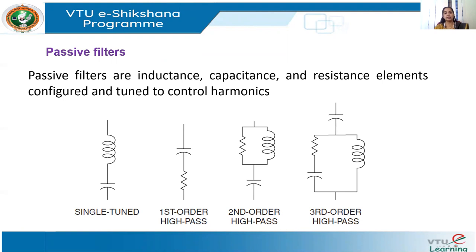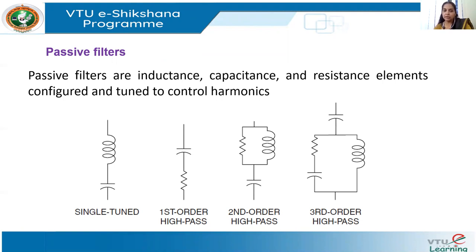You would have heard the words passive and active in your lower semesters when dealing with electronic circuits, transistor amplifiers, or transistor filters. When we talk about passive filters, the word passive indicates that we have passive components in it. They basically contain passive components like inductance, capacitance, and resistance in different combinations to form the filter.